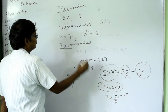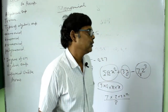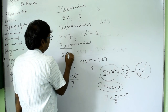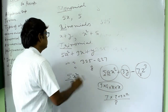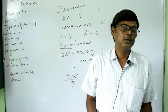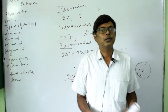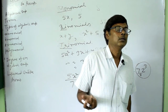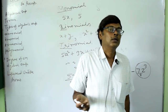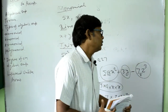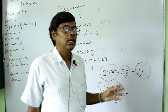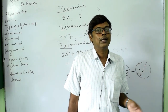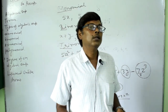A trinomial has three terms — 'tri' means three, like triangle. For example: 5a² plus 3x plus y. If there are more than three terms, the general name is polynomial. Four or more terms don't have a special name beyond polynomial.